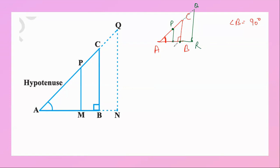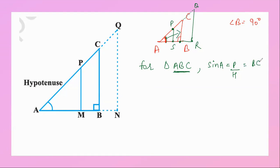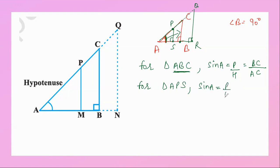Name the first interior point as P, the foot of its perpendicular as S. Now for triangle ABC, sine A equals perpendicular over hypotenuse, which is BC over AC. For triangle APS — since PS is perpendicular to AC, making a 90-degree angle — sine A equals perpendicular PS over hypotenuse AP. As per the statement, these two should be equal, so let's prove it.